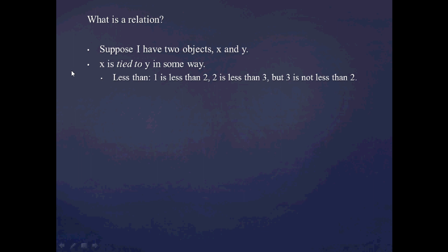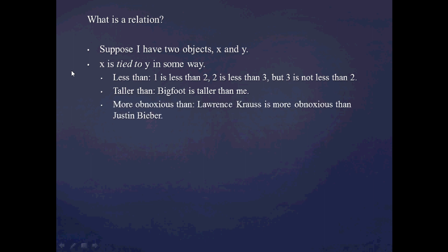So what do we mean by the phrase 'less than'? We mean things like 1 is less than 2 — there's just something about the number 1 that makes it less than the number 2. 2 is less than 3. But there's just something about the number 3 that doesn't qualify for this sort of relation, so we say that 3 is not less than 2. And this doesn't have to be mathematical either. We can say that the phrase 'taller than' would express a relation. So 'Bigfoot is taller than me' is perfectly intelligible — it expresses a relation between two objects, namely Bigfoot and me. Also notice that this relation is not reflexive, in the sense that Bigfoot being taller than me doesn't imply that I am taller than Bigfoot. A final example is the phrase 'more obnoxious than' — we can say that Lawrence Krauss is more obnoxious than Justin Bieber, which I take as a self-evident truth.